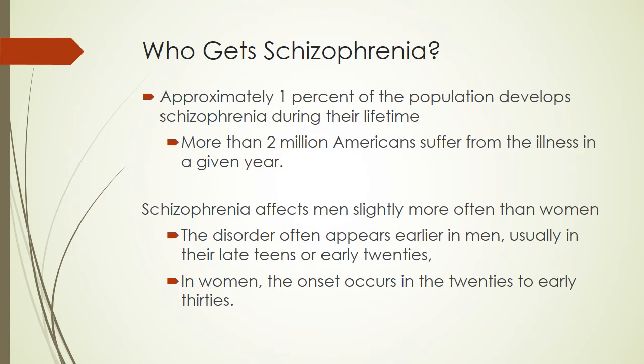So who gets schizophrenia? Approximately 1% of the population develops schizophrenia during their lifetime. About 2 million Americans suffer from the illness in any given year. It is slightly more likely to appear in men than women. The disorder often appears earlier in men, sometimes in the late teens or early 20s, whereas in women the onset occurs in the 20s to early 30s.